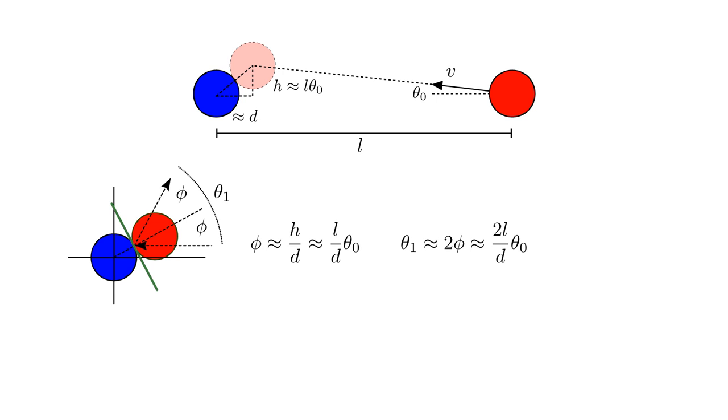After one collision, the red ball will be traveling at an angle theta-one, which is approximately two phi, or two L over d times theta-zero. The collision has amplified the initial angle theta-zero by a factor two L over d. The distance L is much larger than the diameter d, so two L over d is a larger number.